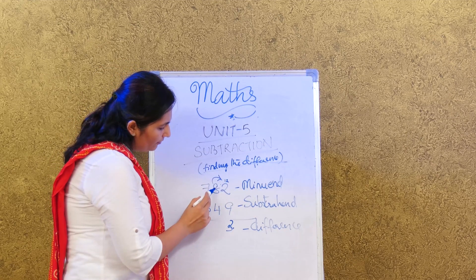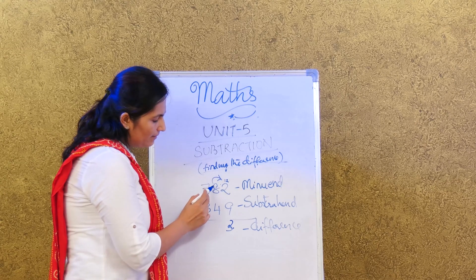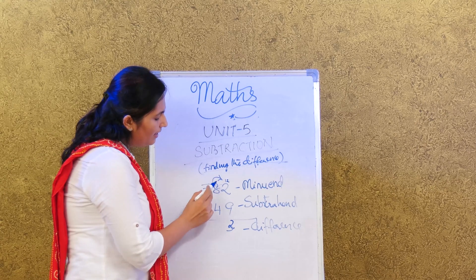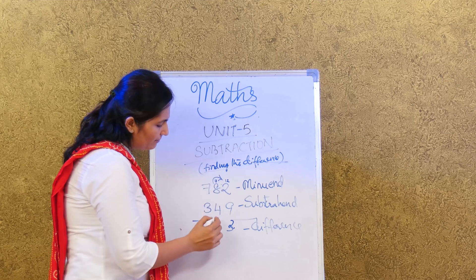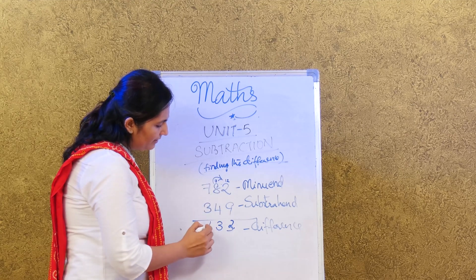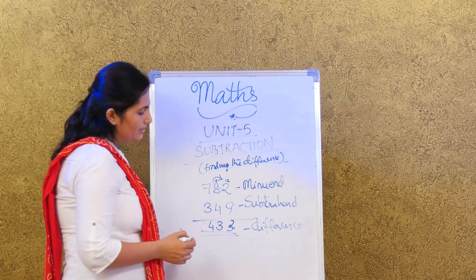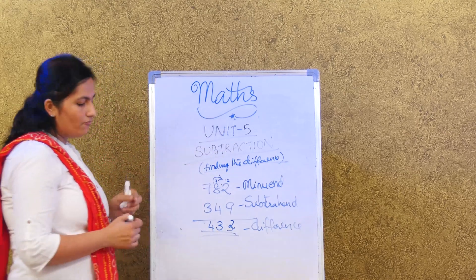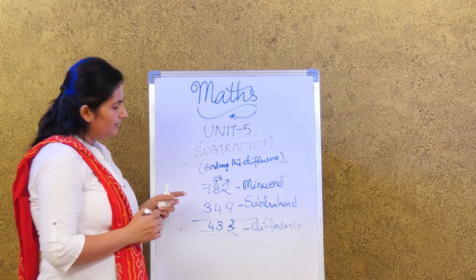Because we borrowed from 8, this becomes minus one, so we will have it as 7. So 7 minus 4 is 3, then 7 minus 3 is 4. So our answer would be 433.